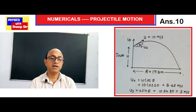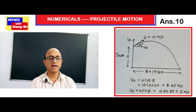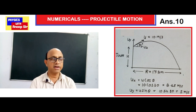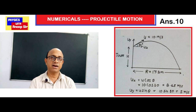In this question, a body is thrown from a tower of height h at 10 meter per second at 30 degrees from the horizontal. When it lands on the ground, the total range is 17.3 meters. We will solve this to find the tower height.